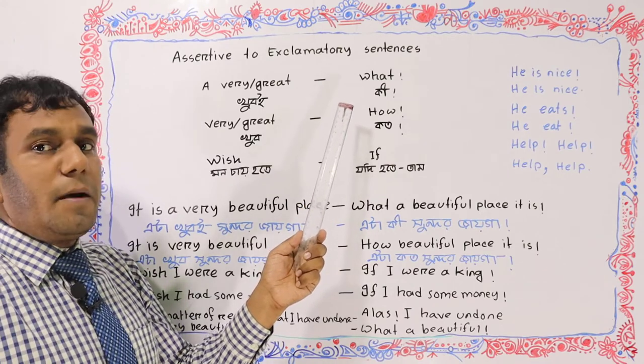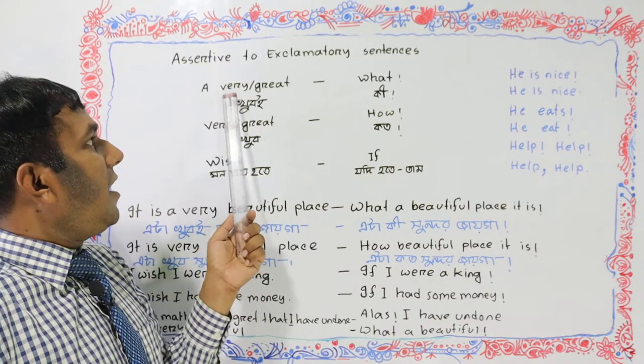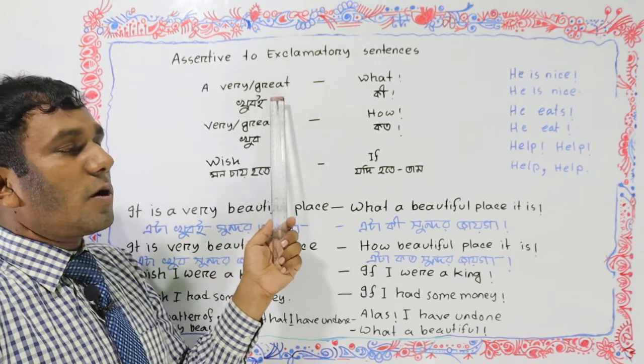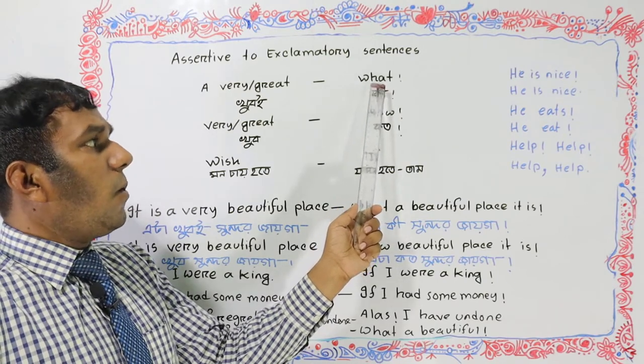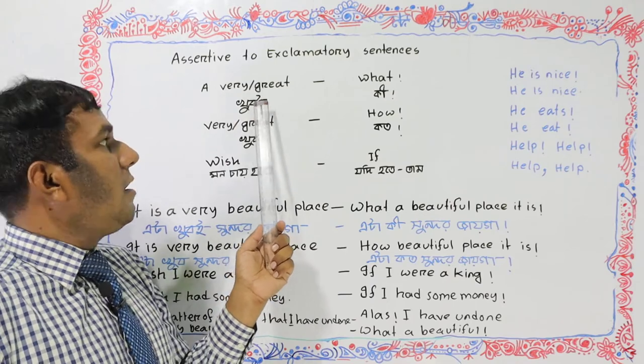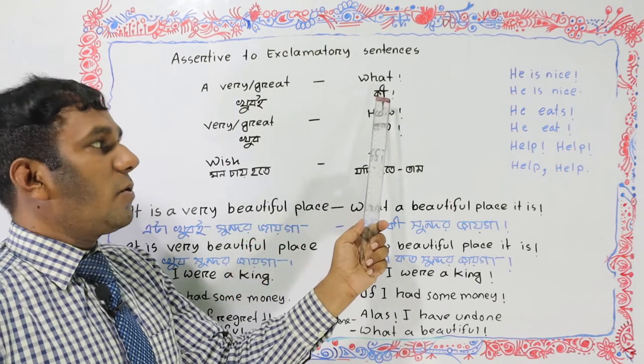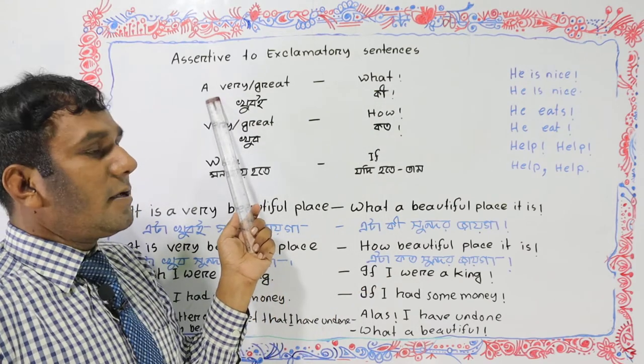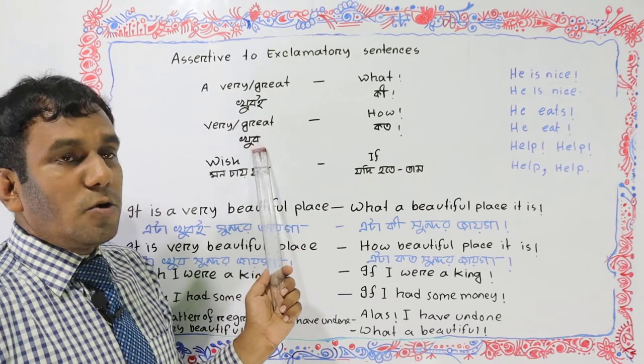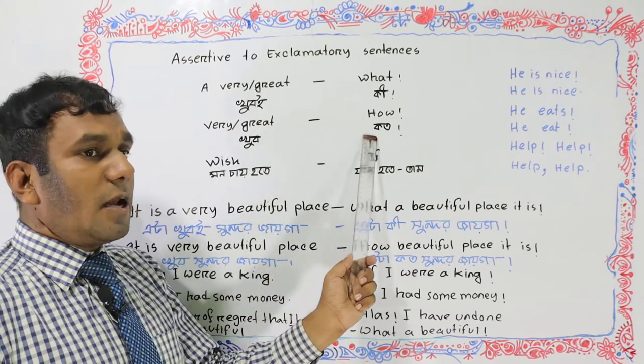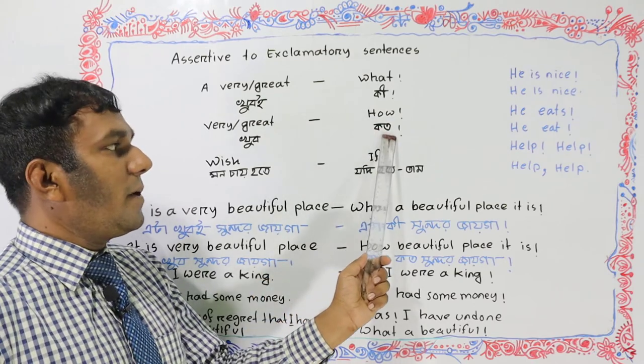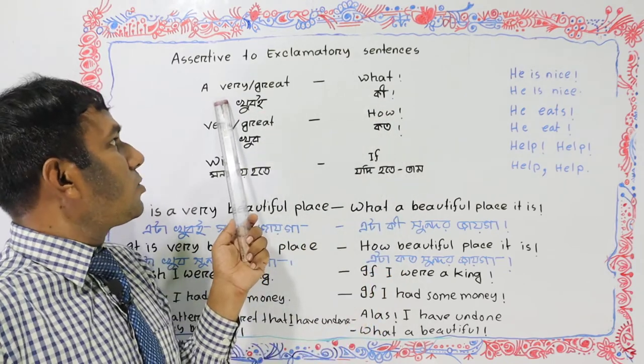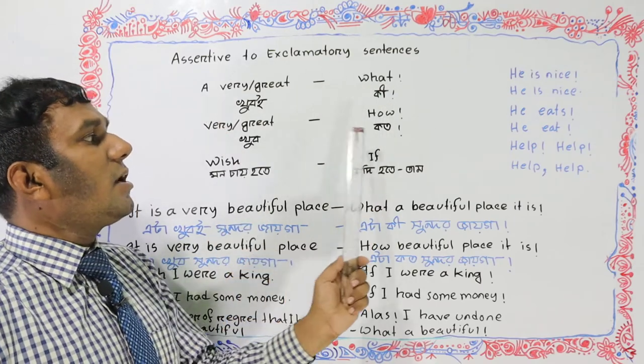Different sentences have different meanings. When an assertive sentence has words like 'very' or 'great', to transform it to exclamatory sentence, we use 'what' or 'how'. If the sentence has 'very' or 'great', those words will change. We drop them and use 'what' or 'how' instead.